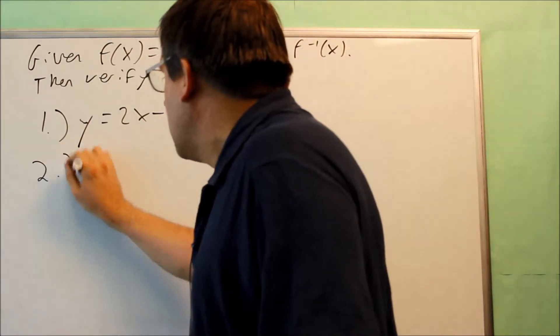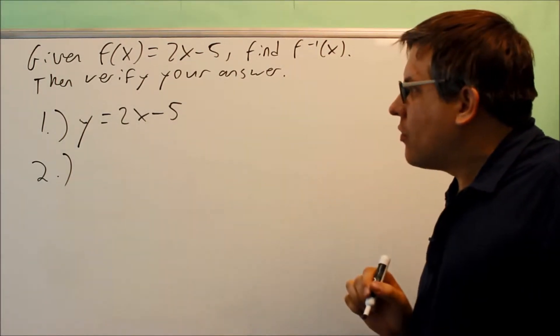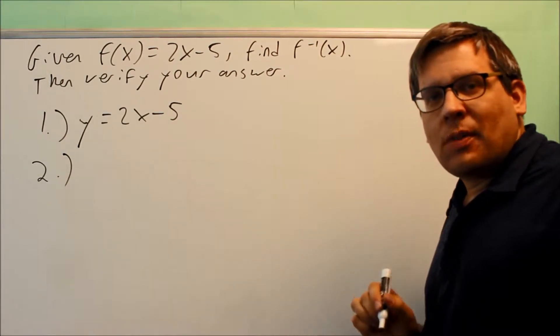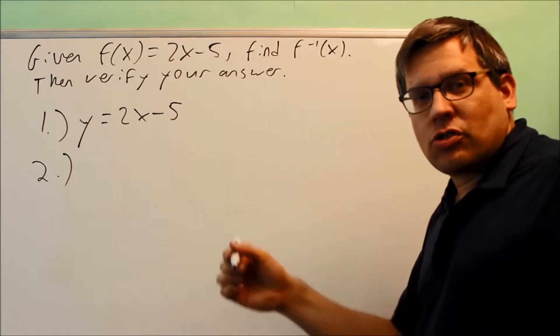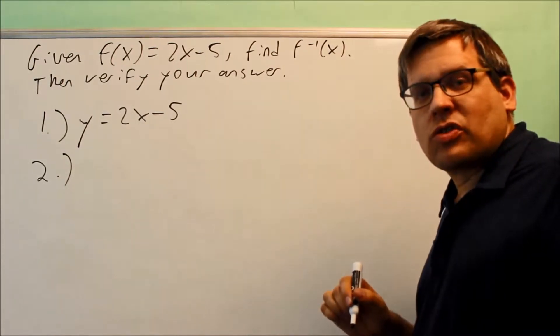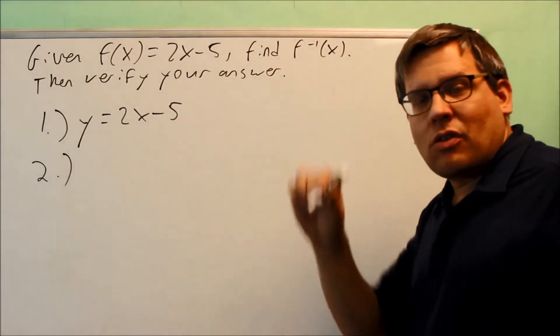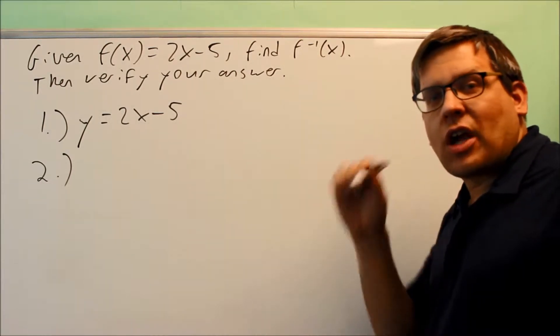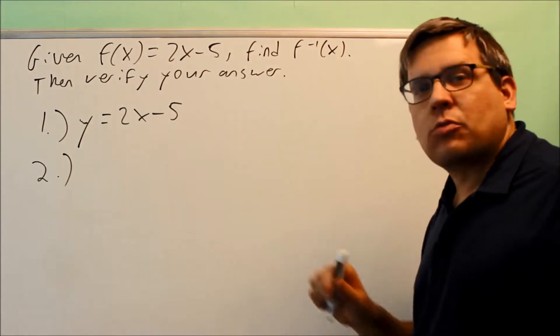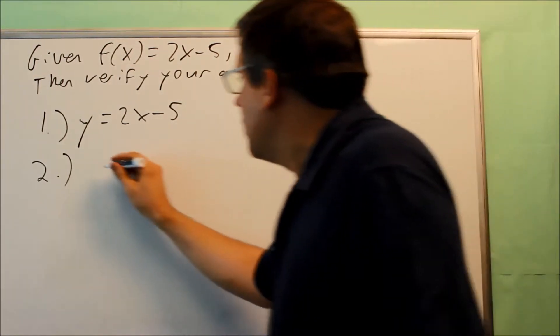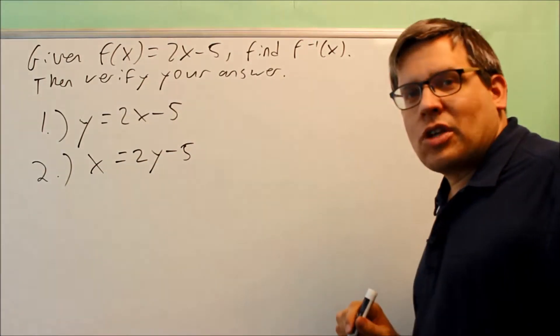Number two says switch x and y. This is the most important part that you have to do, and the reason why we're switching is because if you looked at the graphs, if you look at two graphs of the original function and its inverse, you'll notice that the x and the y coordinate for the first graph is exactly switched from the inverse. So the x and y for each are switched, so that's why we've got to do that when we do step number two here. We're going to switch x and y. x equals 2y minus 5. Okay, done with that step.